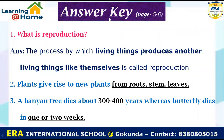Let's see the answer key of the previous session. Question 1: What is reproduction? The process by which a living thing produces another living thing like themselves is called reproduction. Second, a plant gives rise to a new plant from the root, stem, and leaves. A banyan tree lives about 300 to 400 years, and a butterfly dies in one or two weeks. Check it, correct it, and understand it.